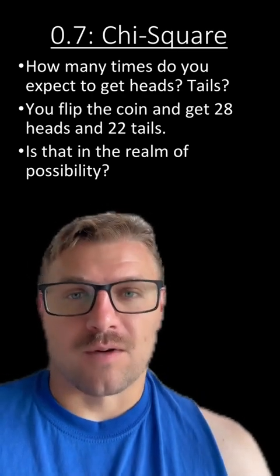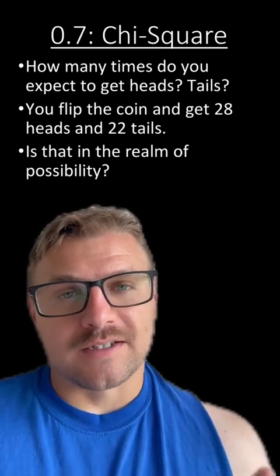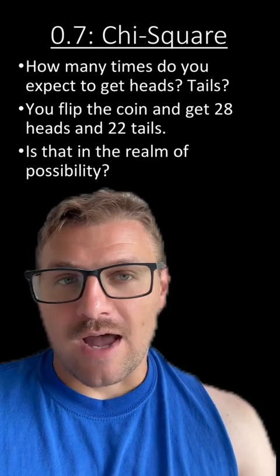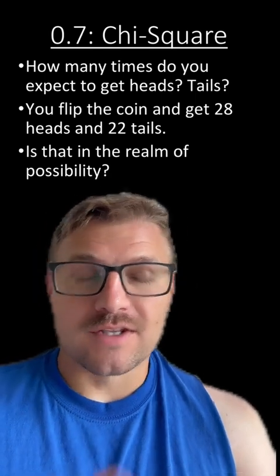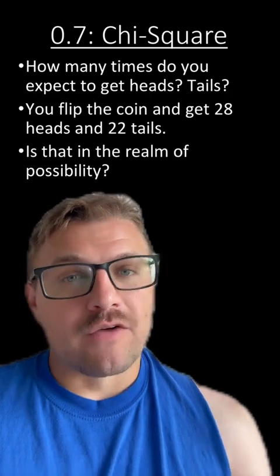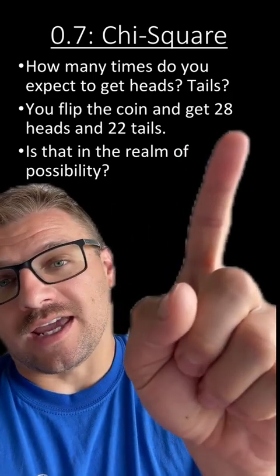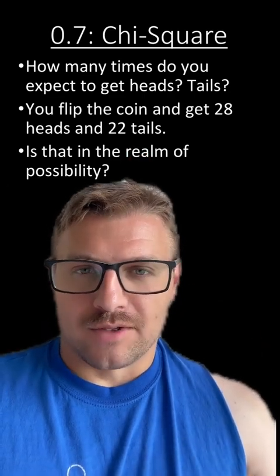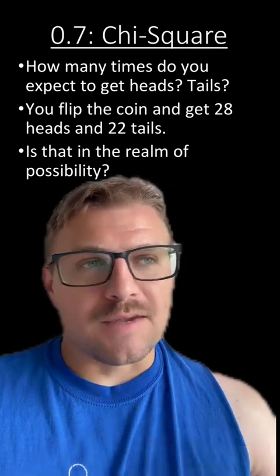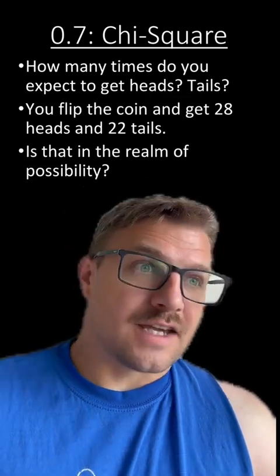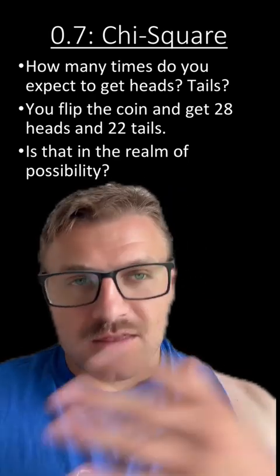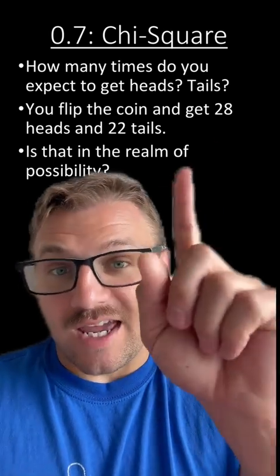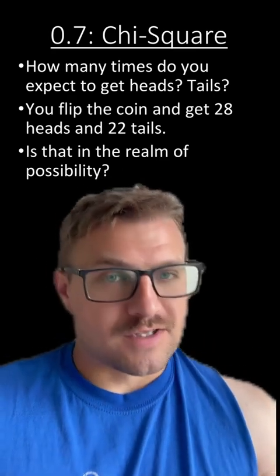All right, so let's do that first practice problem. How many times do you expect to get heads and tails if you flip a coin 50 times? So again, since there are only two outcomes, you can either be heads or tails, it's going to be 25 and 25. However, you flip a coin and you get 28 heads and 22 tails. Is that in the realm of possibility? And yes, there is a possible chance that you flip 50 heads and zero tails. But we're just saying in the realm of possibility for our experiment, is getting 28 heads and 22 tails in the realm of possibility?